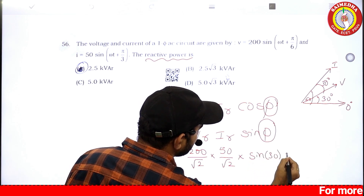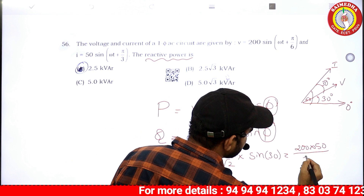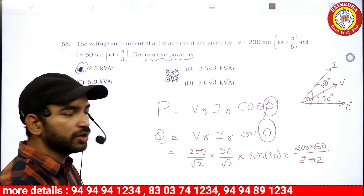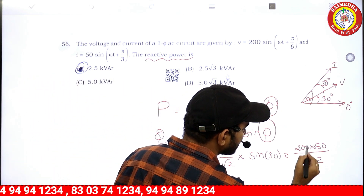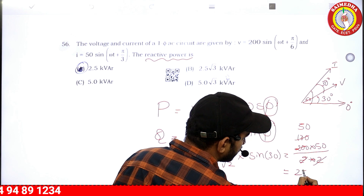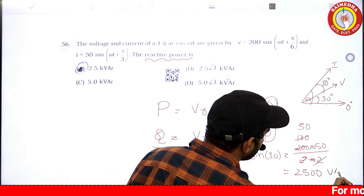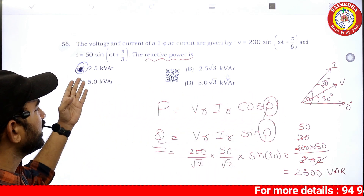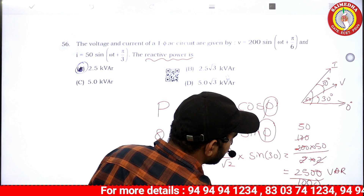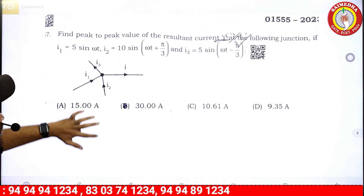Solving: 200 divided by root 2, into 50 divided by root 2, into sin30 which is 1 by 2. That gives 200 into 50 divided by 4, equal to 50 into 50, equal to 2500 VAR. Dividing by 1000 gives 2.5 KVAR. The reactive power is 2.5 KVAR.